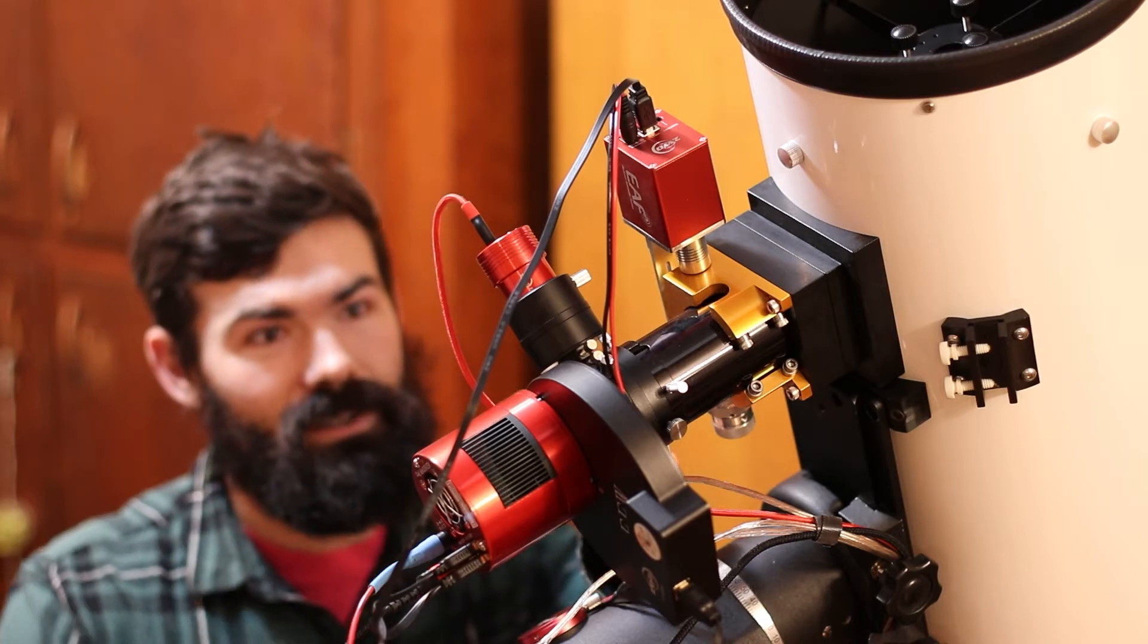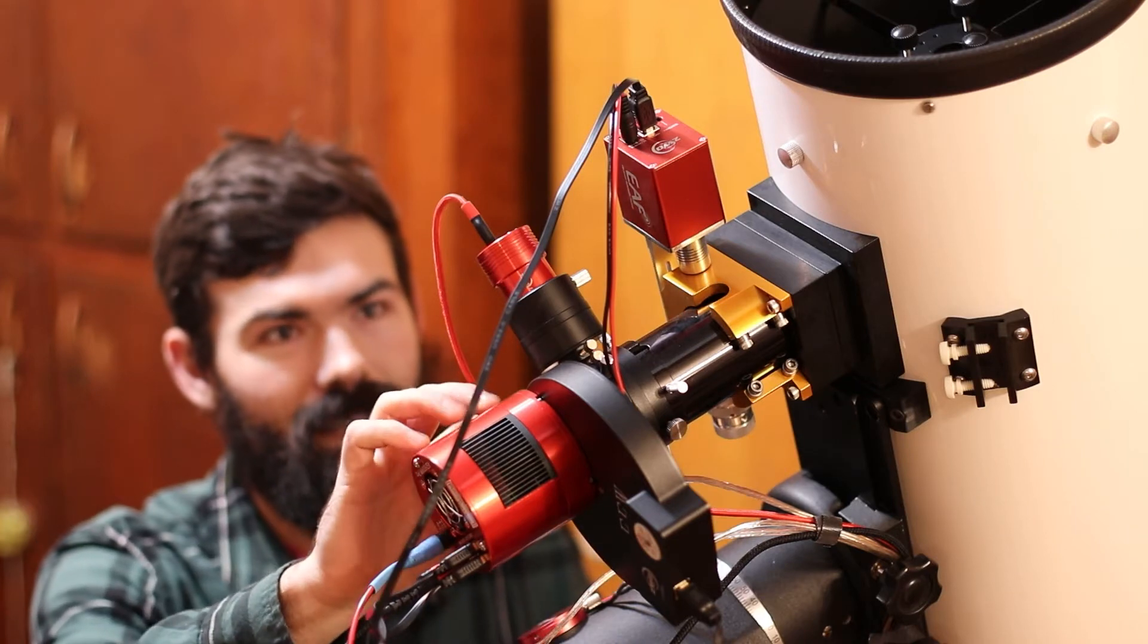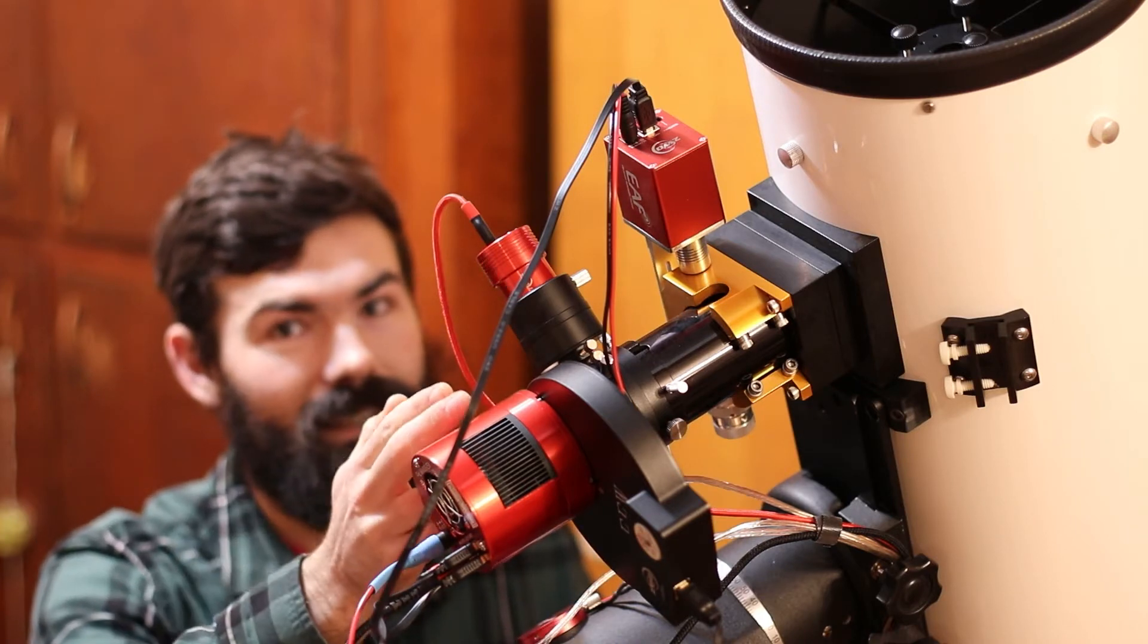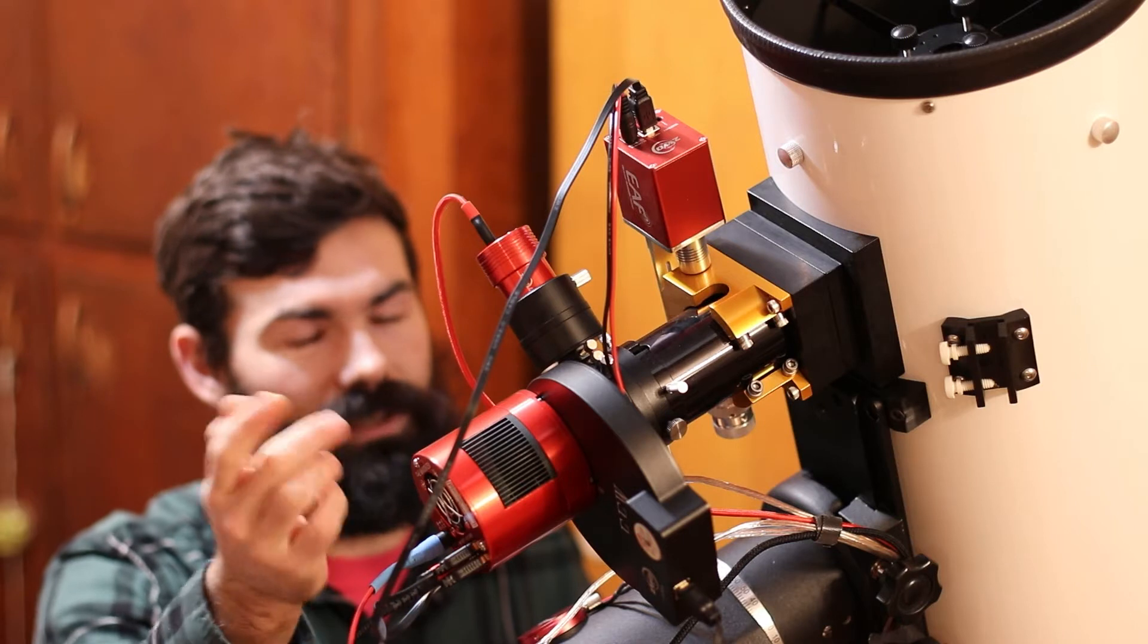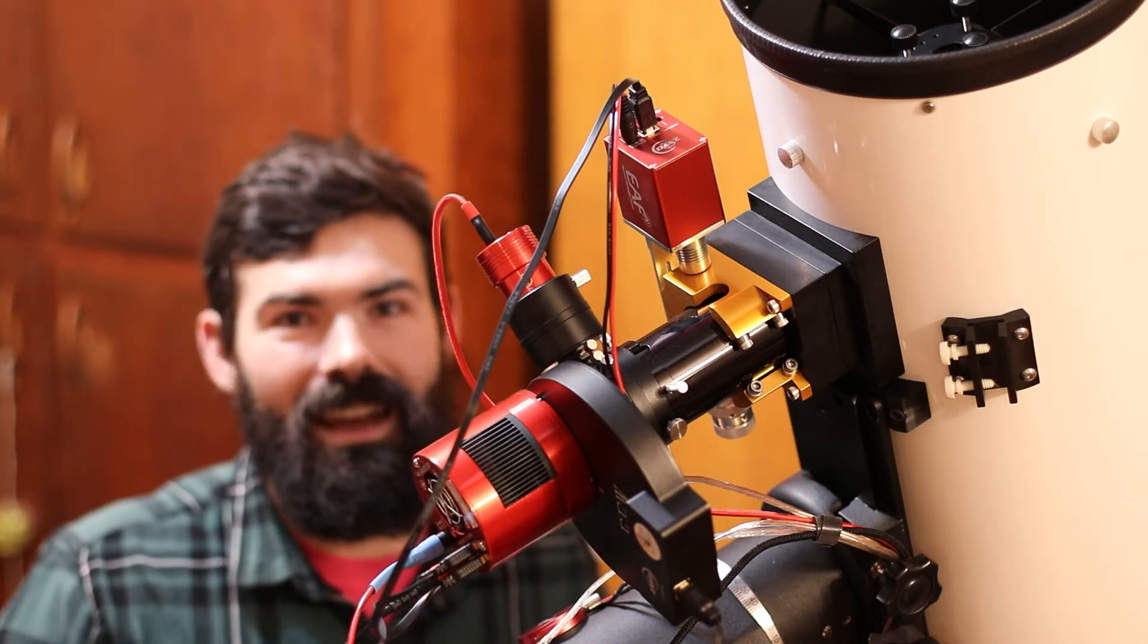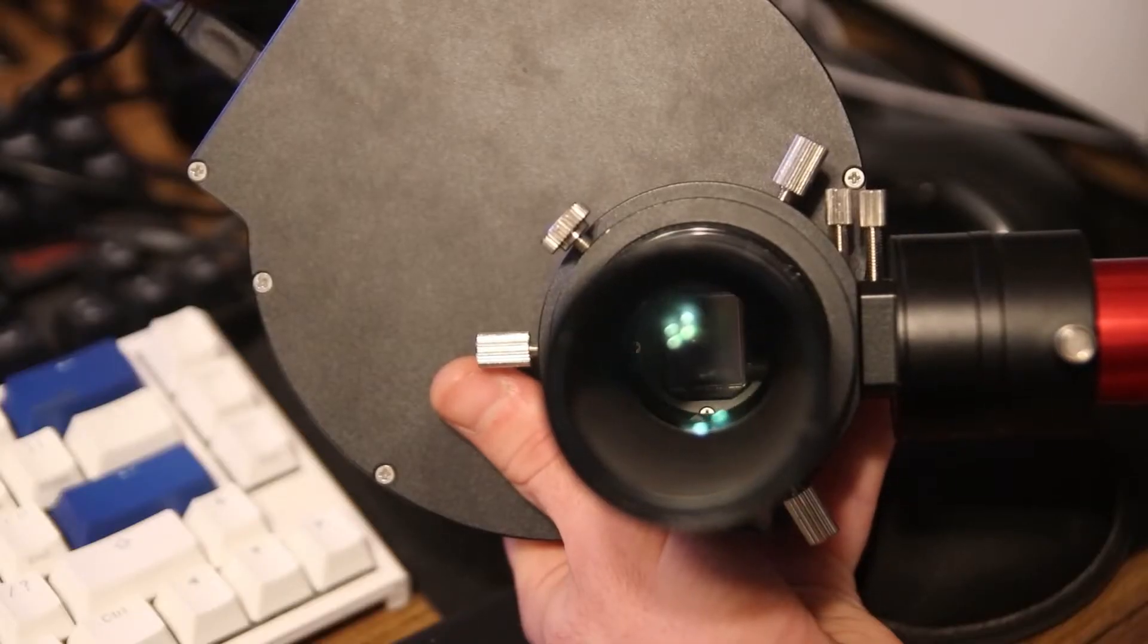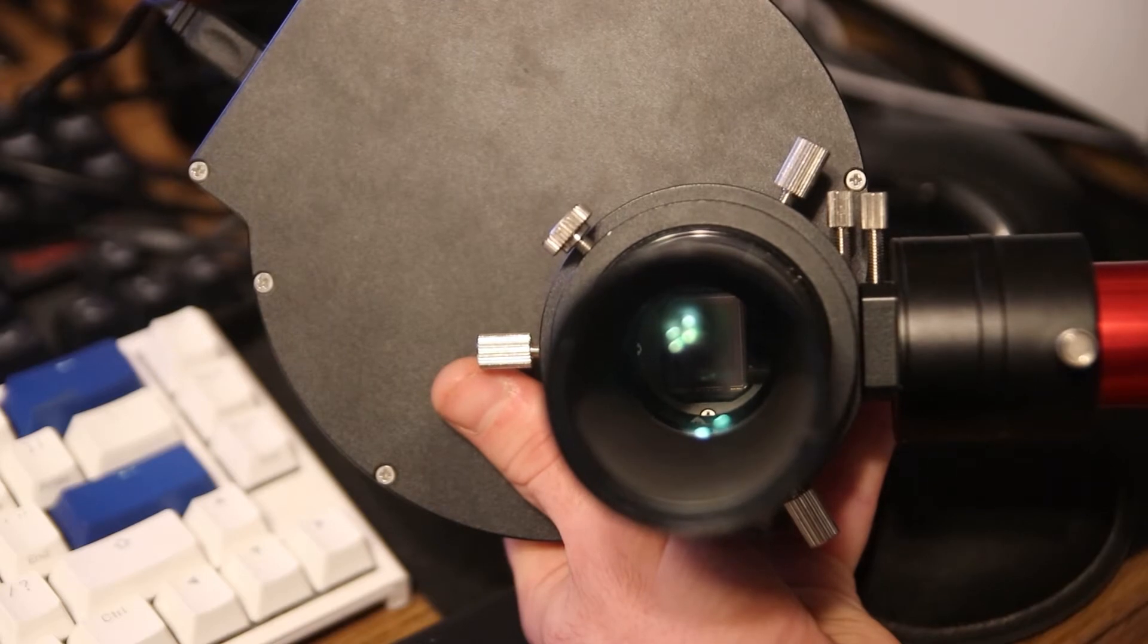The off-axis guider just has a little prism that picks up some light from the edge of the light cone. So it's actually seeing the same light and same image that your imaging camera does, which has some advantages. I'll make a video at some point about the differences between an off-axis guider and a more traditional guide scope, but they both do the same thing.